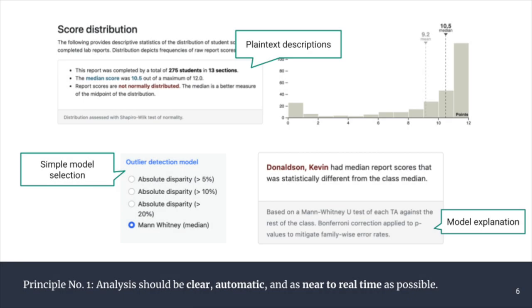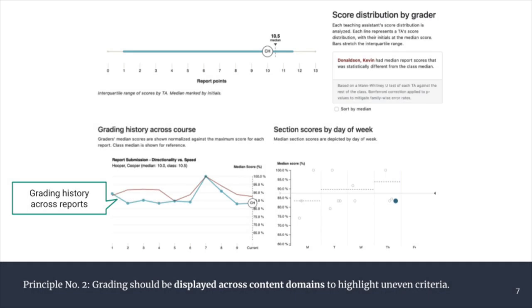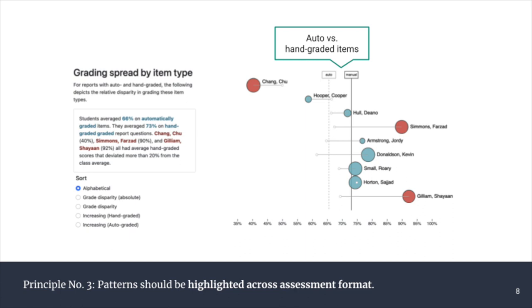Here we can see examples of each design principle instantiated in the interface. Graphics and analyses ingest student data on demand, keeping information relevant and current. Each dashboard element merges together data visualization and plain text interpretation to provide key takeaways from that data, making complex information comprehensible. Interface elements like the outlier model selector and model descriptions provide instructors with tools to transparently select between clearly explained criteria for identifying grading patterns that may need follow-up. TA grading metrics like score distribution and section median are shown against the aggregated class dataset at multiple timescales — the current report, all section meeting times during the week, and to date within the semester. Finally, this visualization shows how scores varied by assessment format between auto-graded and hand-graded items between TAs. Future iterations will also connect TA scores to other assessment items like quizzes and TA-generated feedback.